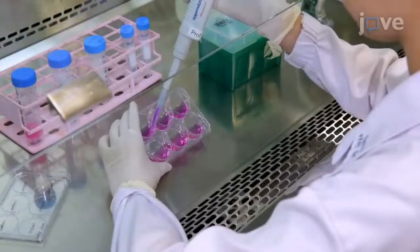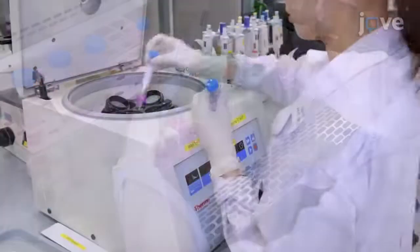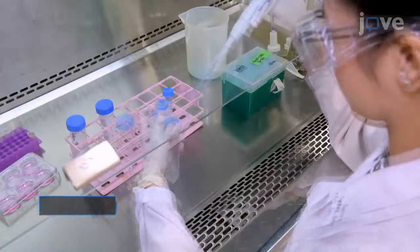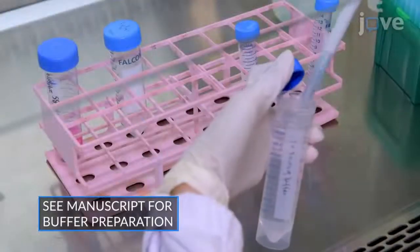At each time point, collect the cells into a 15 mL centrifuge tube and centrifuge at 300 times G for 5 minutes. Wash the cell pellets twice with phosphate-buffered saline and then resuspend the cells with 1× binding buffer.